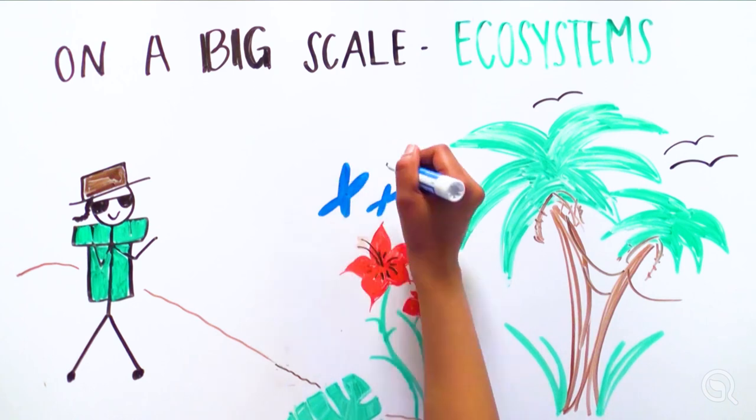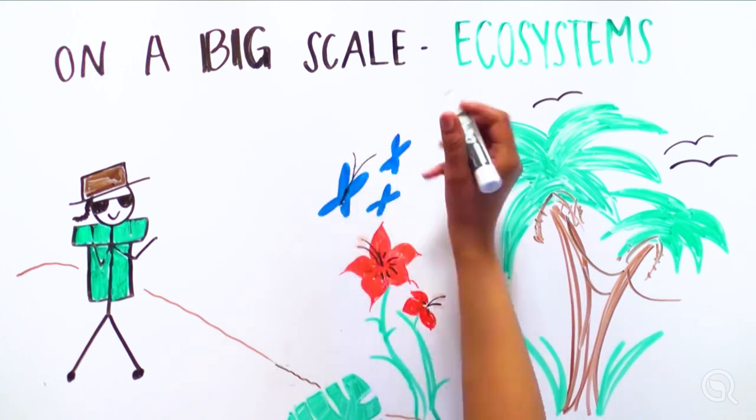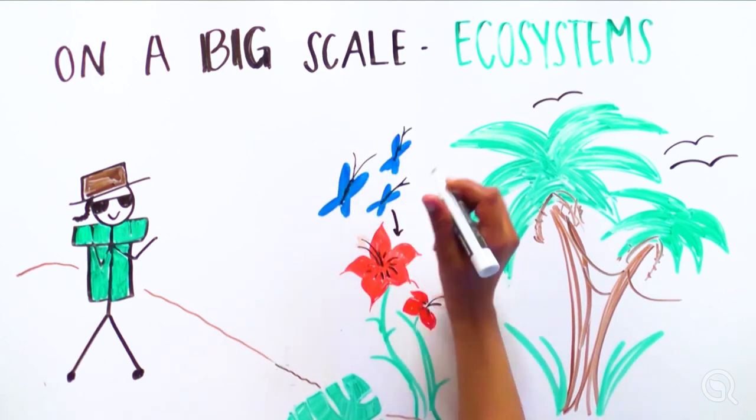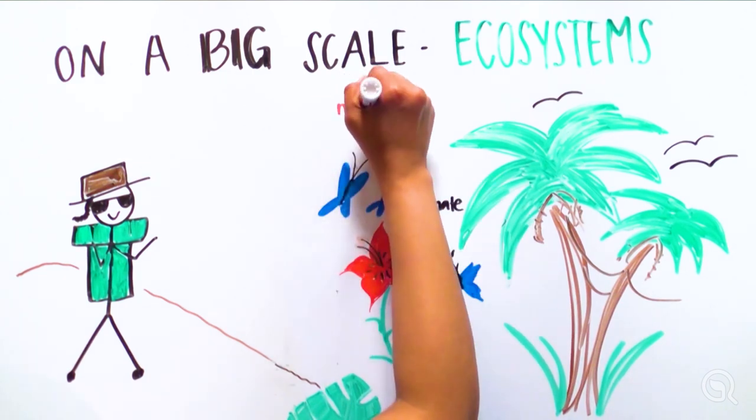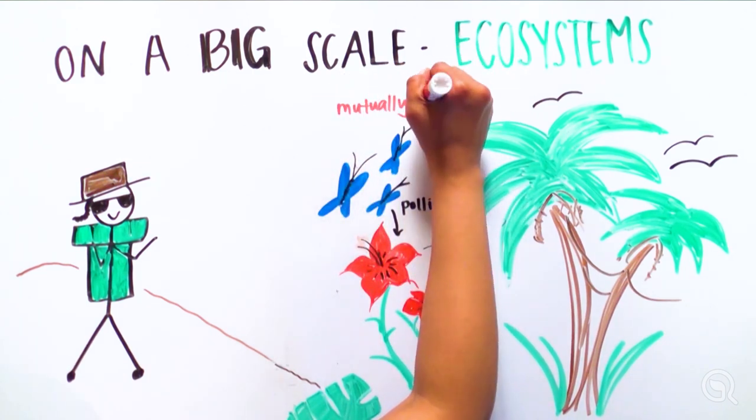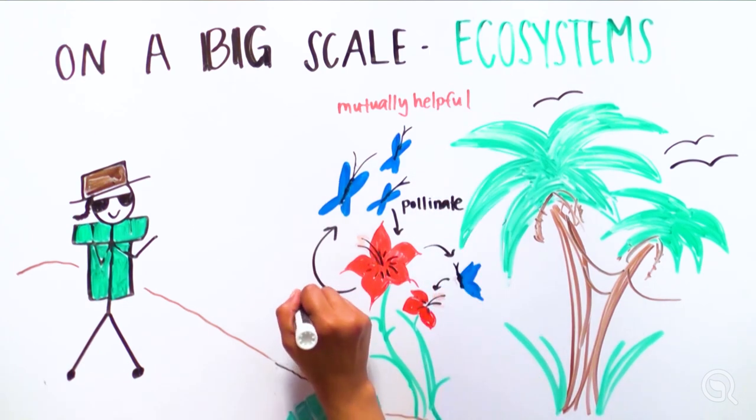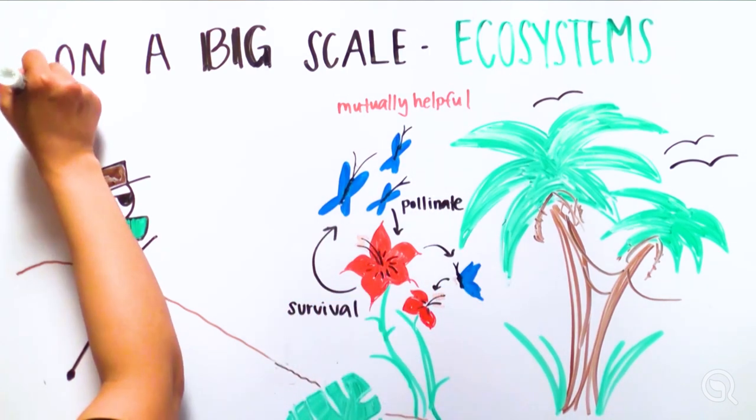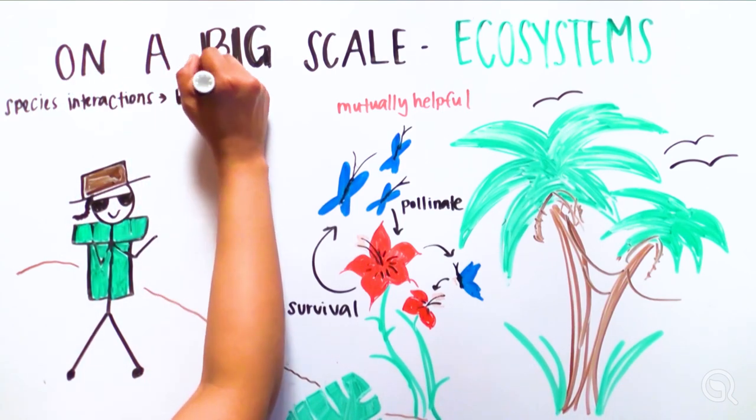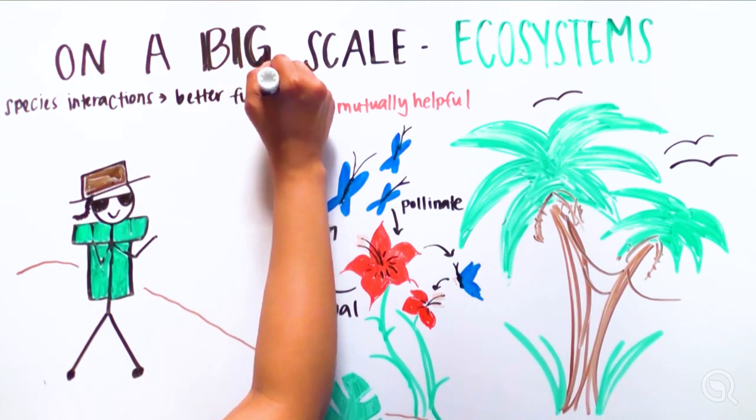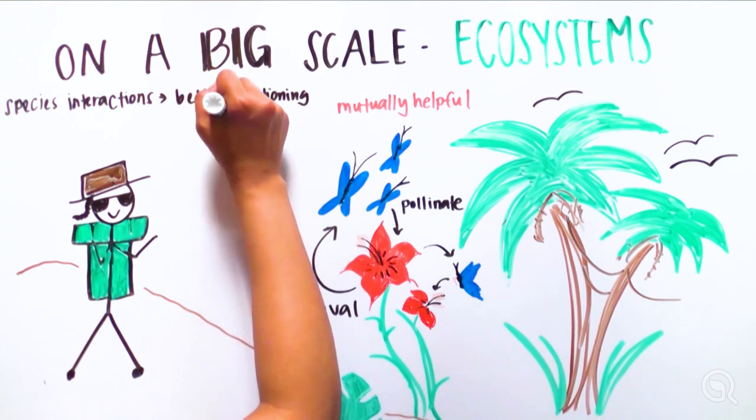Look closer and observe specific populations of species interacting with each other, like this butterfly population pollinating specific flowering plants, a mutually helpful relationship. Each species is dependent on others for its survival and or reproduction. The more complex the ecosystem structure, the more species interactions, and the better the ecosystem functions.